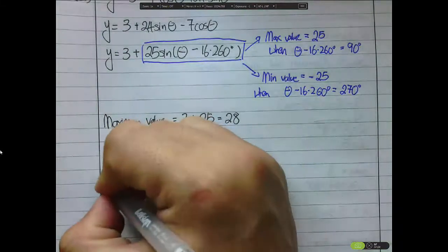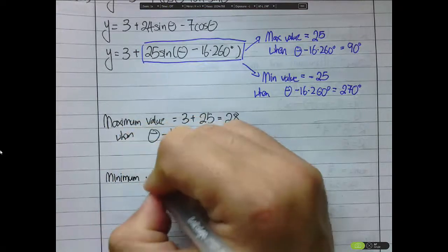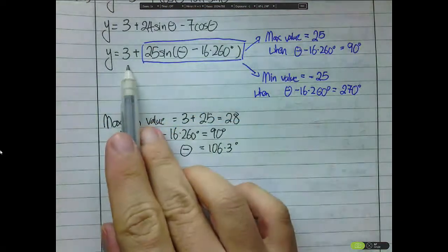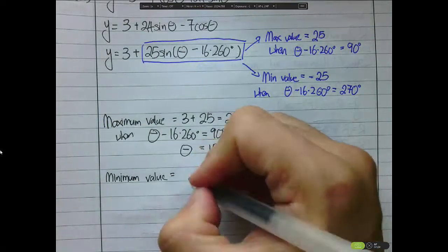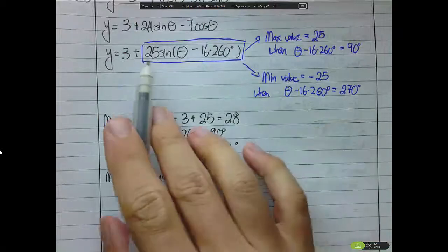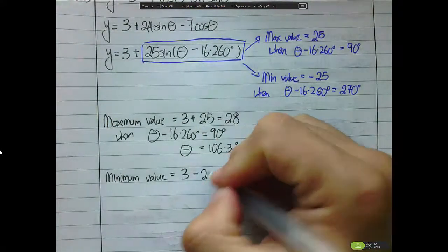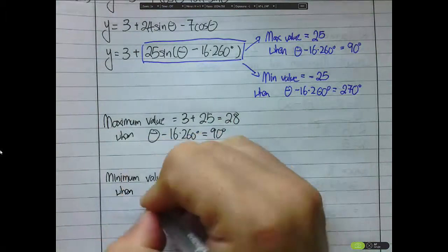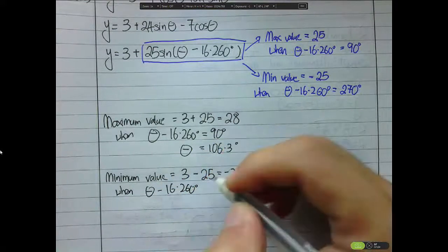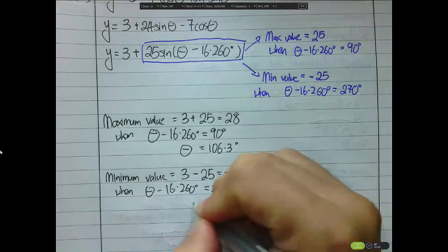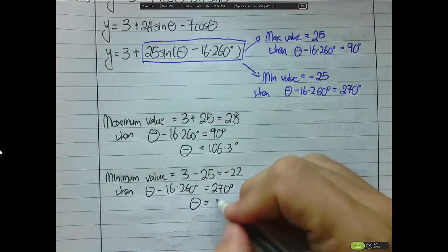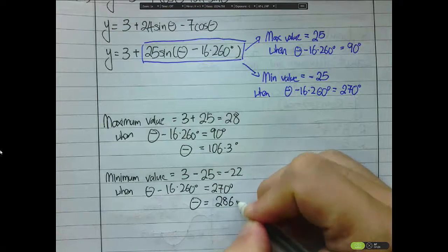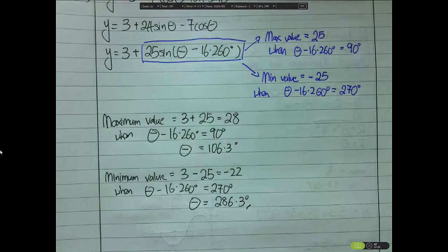The minimum value: the sine portion gives -25, and the constant 3 remains unchanged. So the minimum is 3 - 25 = -22. This occurs when θ - 16.260° = 270°, so θ = 286.3°. That is the idea behind using the R formula to find the maximum and minimum value of a trigonometric function.